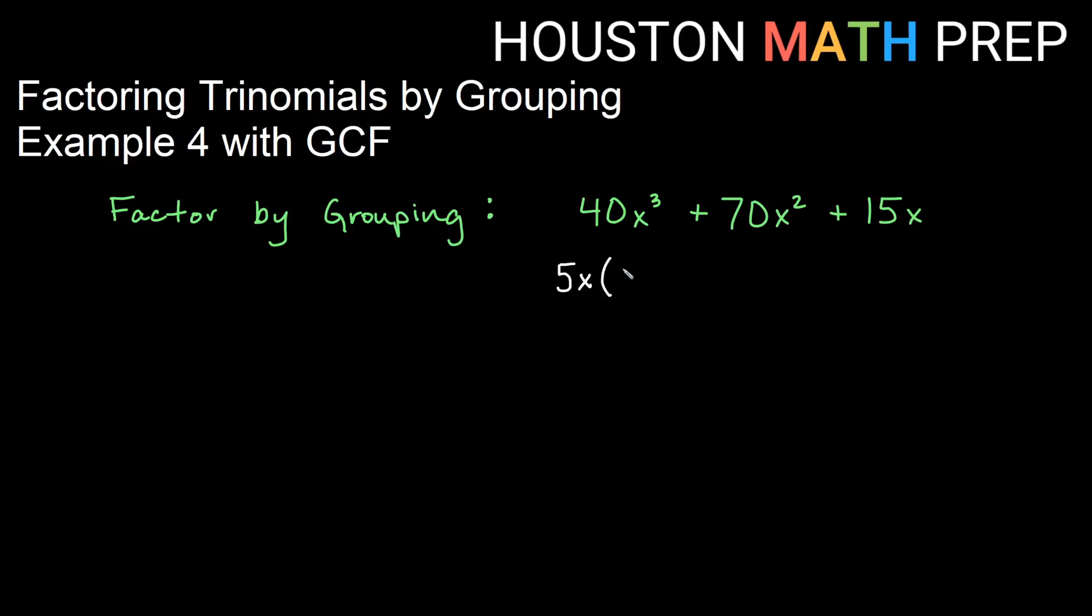Pulling out 5x from the first term would leave 8x². Pulling out 5x from the second term would leave 14x. And then pulling out 5x from the third term would leave 3. So we've factored the greatest common factor of 5x.